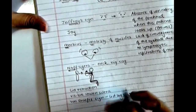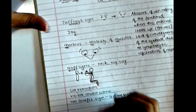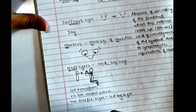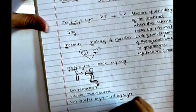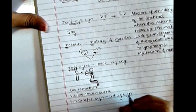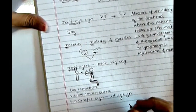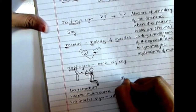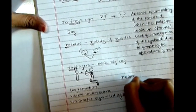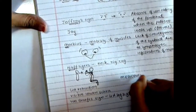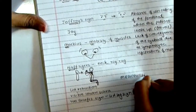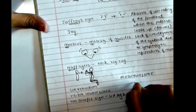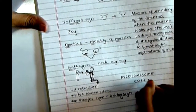Other important signs include lid retraction, visible lower sclera, and the Von Graefe sign which is the lid lag sign. I hope that was helpful and you had fun learning. See you next time — stay awesome!